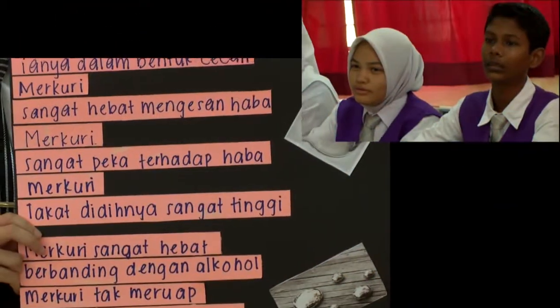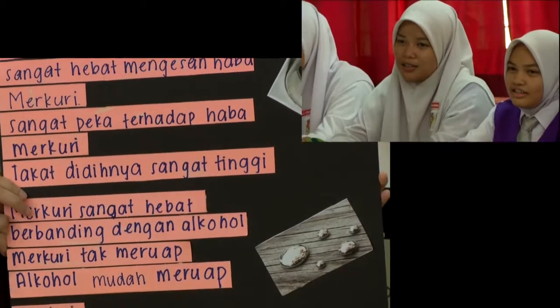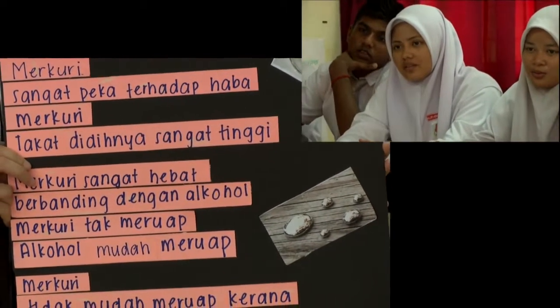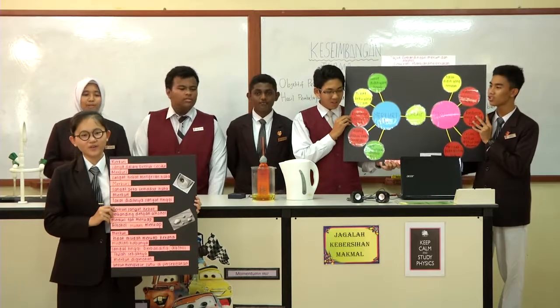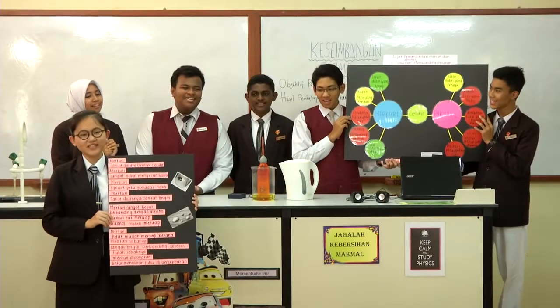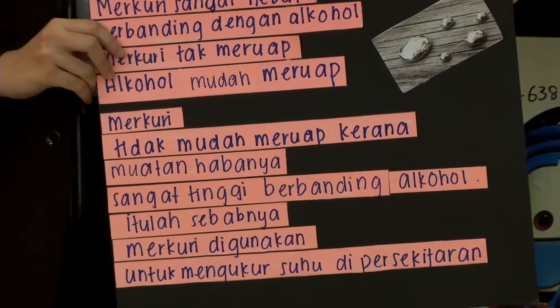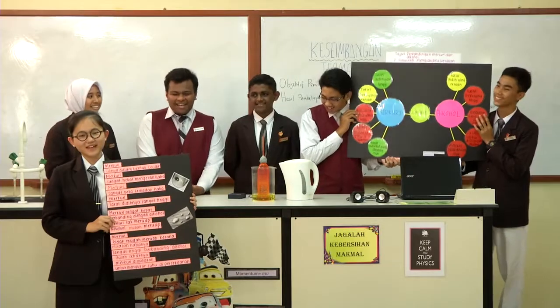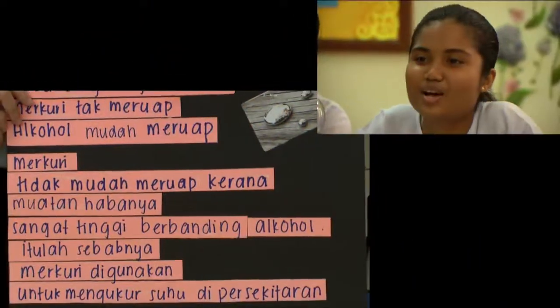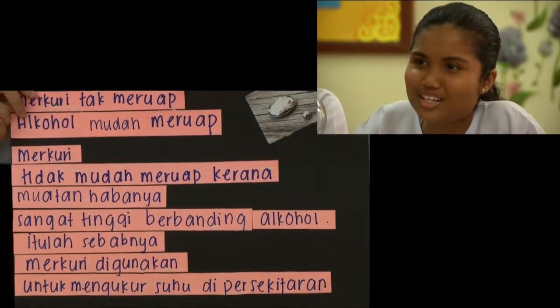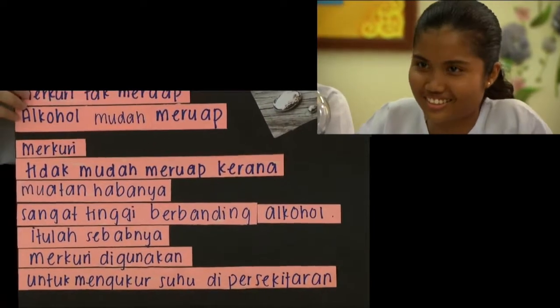Maka alkohol mudah panas. Mercury, takat didihnya sangat tinggi. Mercury sangat hebat berbanding dengan alkohol. Mercury tak meruap, alkohol mudah meruap. Mercury digunakan — itulah sebabnya Mercury digunakan untuk mengukur suhu di persekitaran.